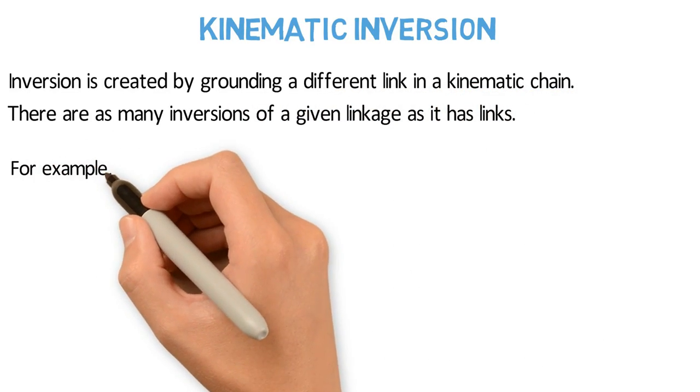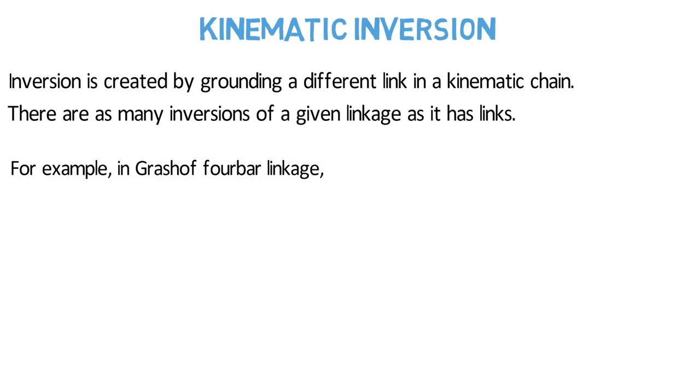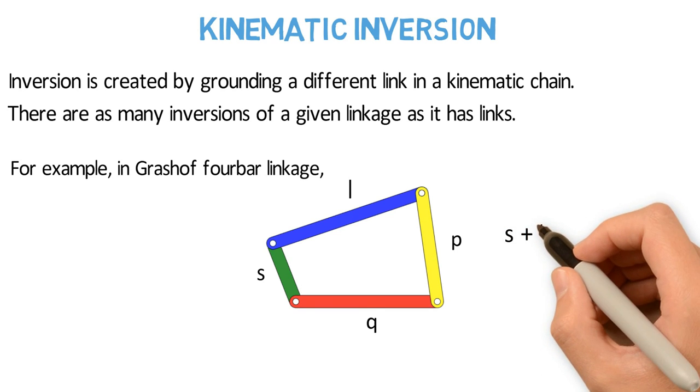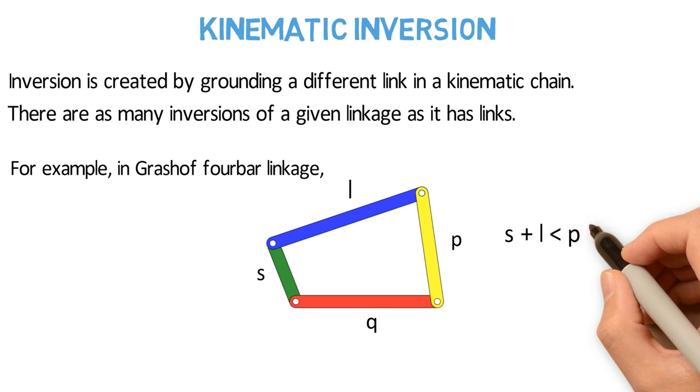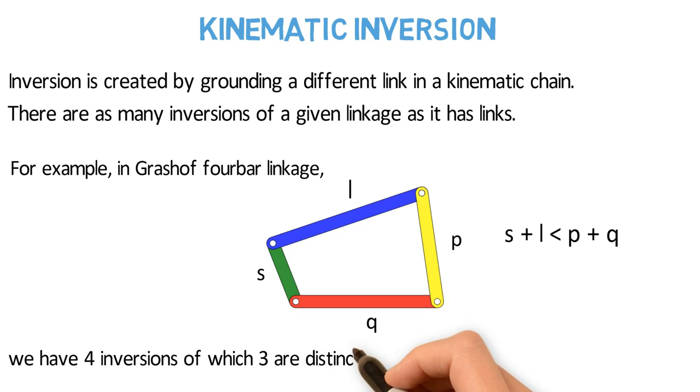For example, in a Grashof 4-bar linkage, for which the sum of length of shortest link and longest link is less than the sum of length of the other two links, we have four inversions of which three are distinct inversions.